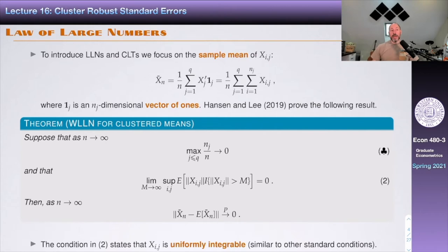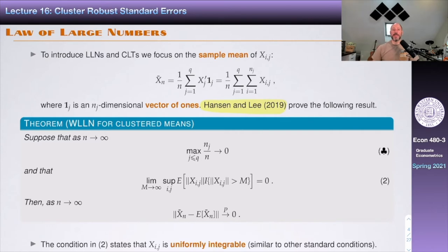We're going to start thinking about a law of large numbers. All the formal results I'm going to give you today come from a paper by Bruce Hansen and Lee, published in 2019. This paper is relatively new and it's great that it was written, because before it, these results were scattered through different sources with different conditions. Now there's a common source with a clean and coherent treatment. That's partly why I revised the notes — before I was taking material from different sources; now I can follow one paper and be consistent with conditions and notation.